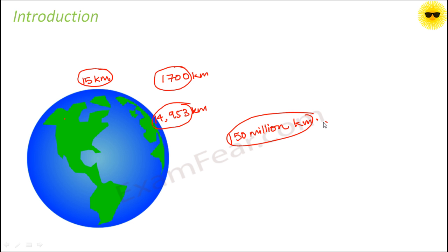So when you look at these numbers, what do you see? First you talk about 15, then we spoke about 1700, then we spoke about 15,000, and then we spoke about 150,000,000. So what happens?